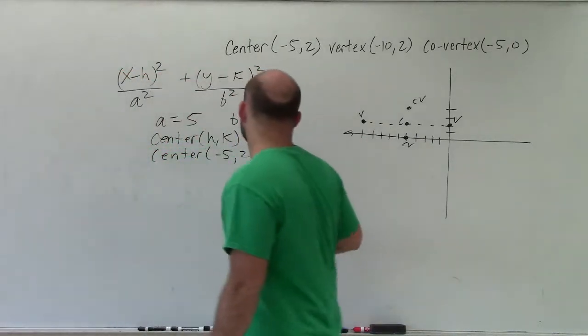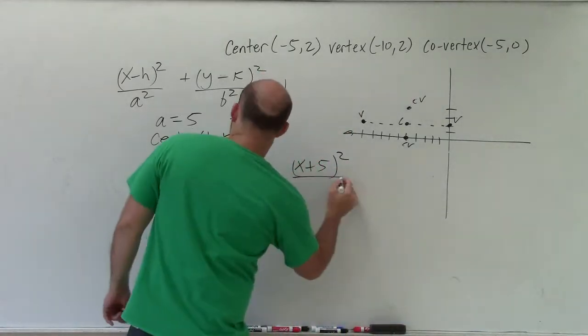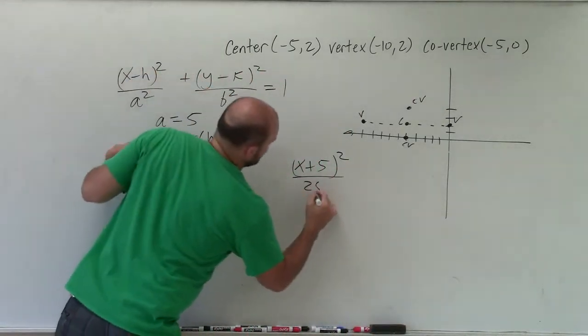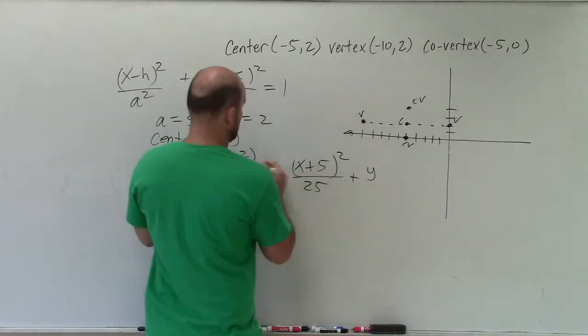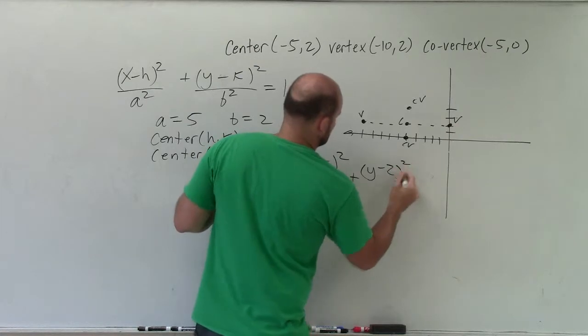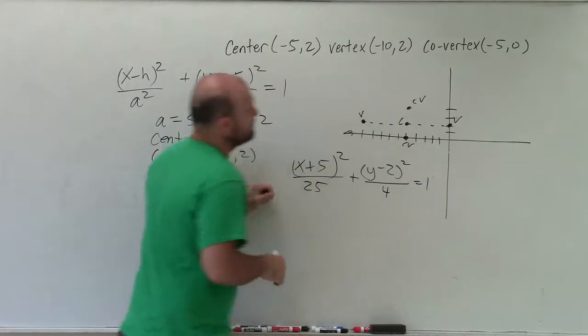So the equation is going to look something like this: (x + 5)² over a², which is 25, plus (y - 2)² over b², which is 2², which is 4, equals 1.